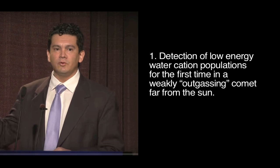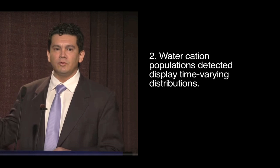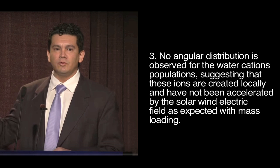1. Detection of low-energy water-group ion populations for the first time in a weakly outgassing comet far from the Sun. 2. Water-group ion populations detected display varying distributions. 3. No angular distribution is observed for the water-group ion populations, suggesting that these ions are created locally and have not been accelerated by the solar-wind electric field as expected with mass loading.